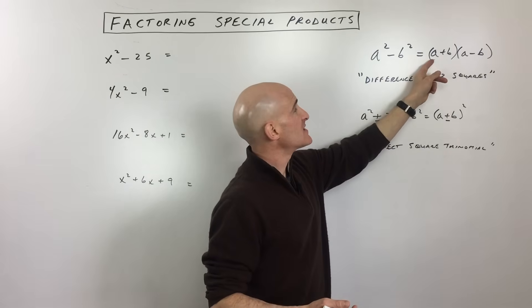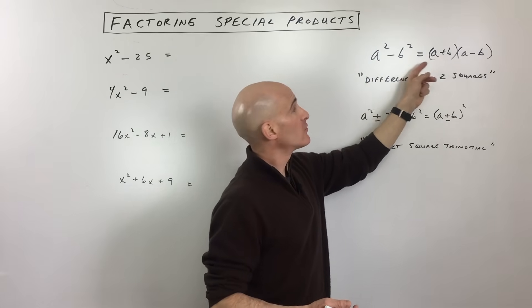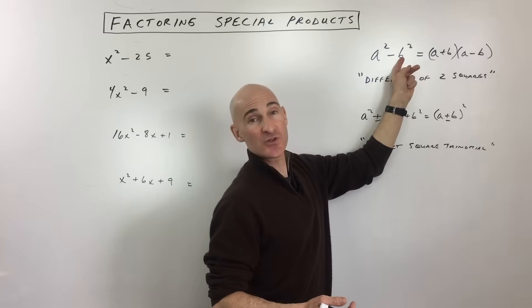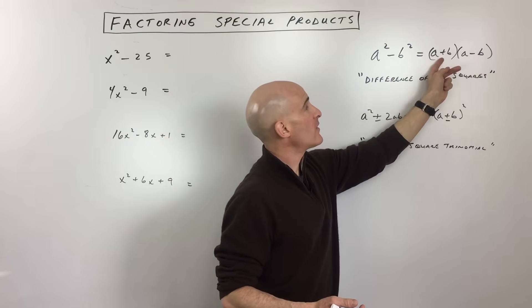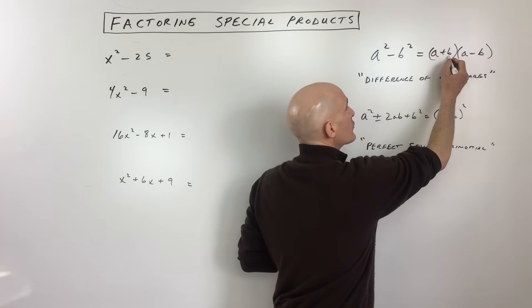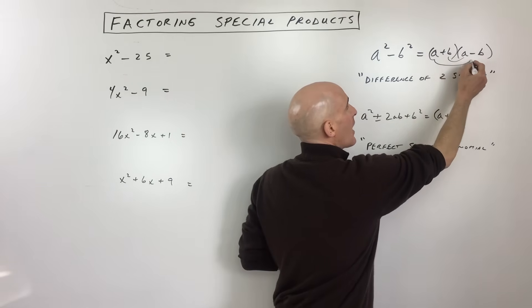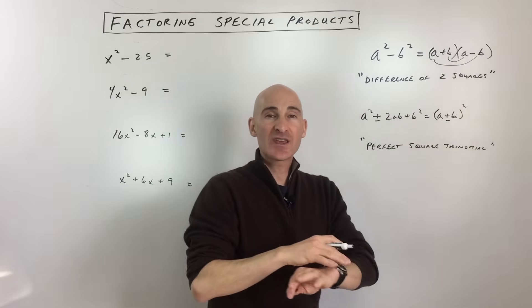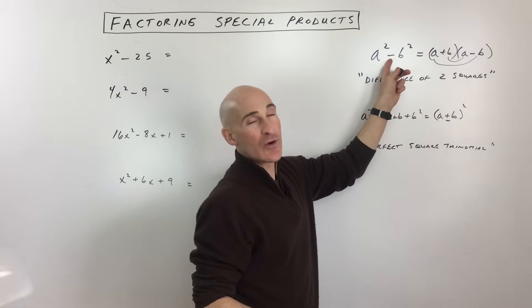When you factor it, you take the square root of a² which is a, and the square root of b² which is b. One of these you're adding, and one you're subtracting. The reason this works is because the inner product ab and the outer product negative ab cancel one another out. That's why you don't have a middle term here.